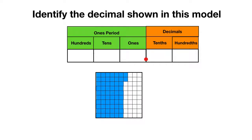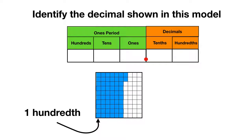Let's do one of these together. Let's identify the decimal shown in this model. Here's our place value chart and our model. Before we start, what can we call one of these little square pieces? Remember that we call each little square piece one hundredth. And how do you write one hundredth as a fraction? You write it as one piece out of one hundred. How do you write one hundredth as a decimal? We write it as .01 because we have zero tenths but one hundredth.